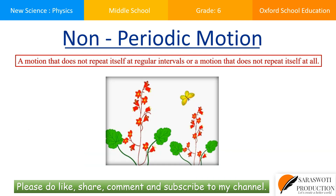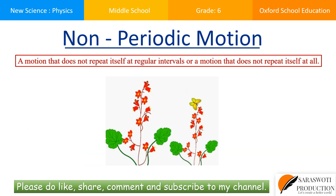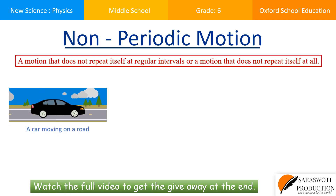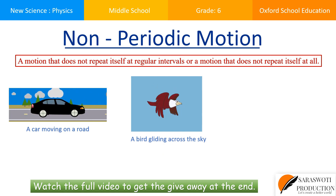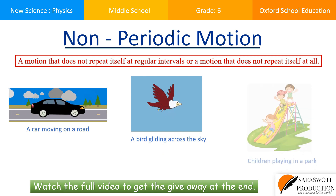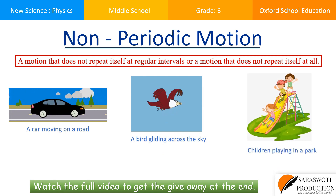Number four: non-periodic motion. A motion that does not repeat itself at regular intervals, or a motion that does not repeat itself at all, is called non-periodic motion. Examples of non-periodic motion are a car moving on a road, a bird gliding across the sky, and children playing in a park.